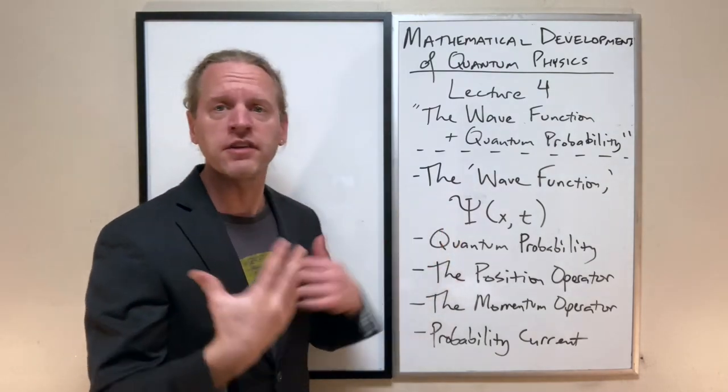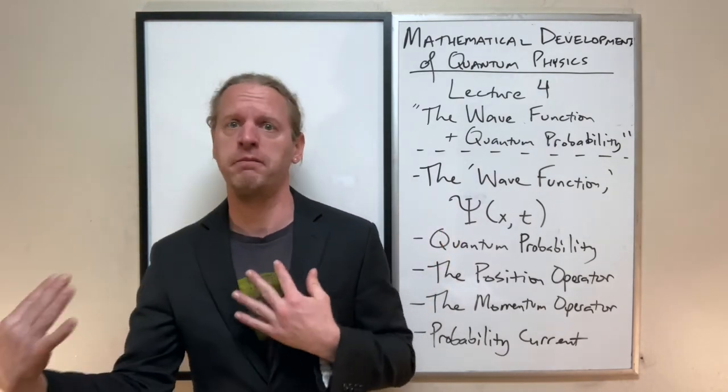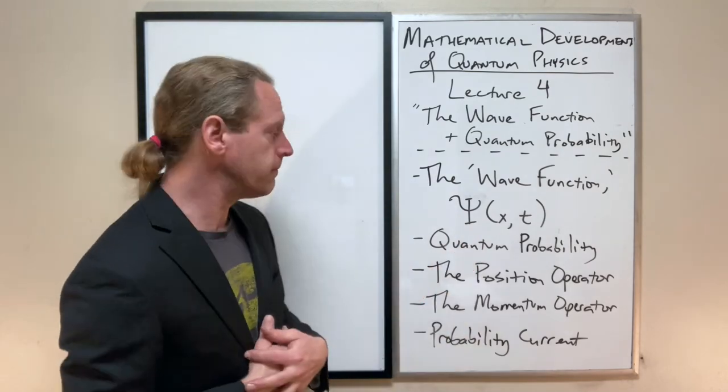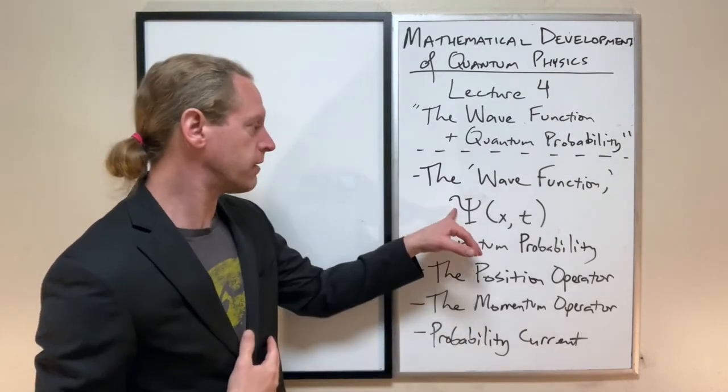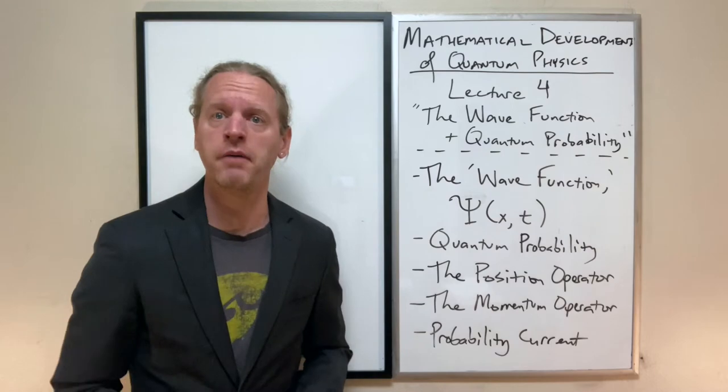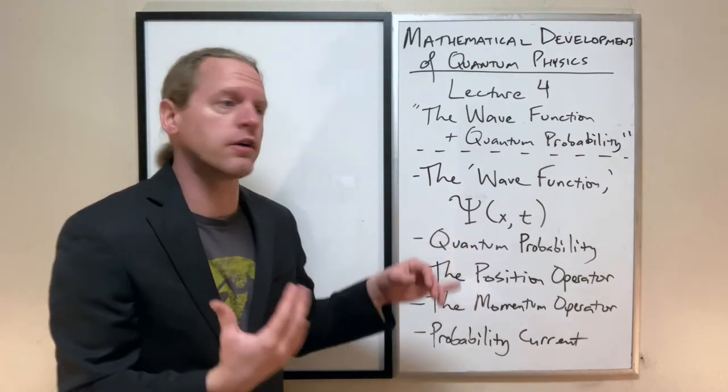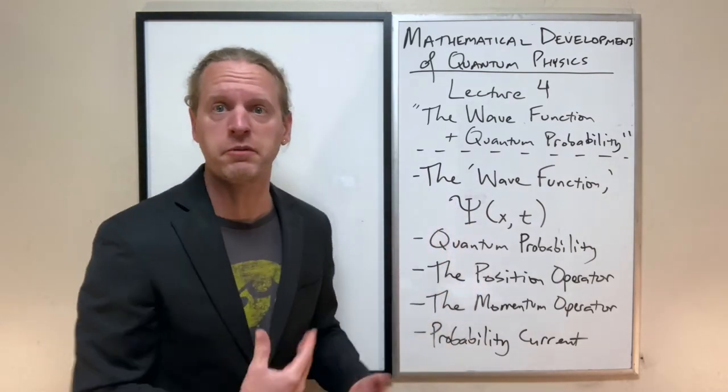So we'll discuss a little bit about the connections between classical probability and quantum probability based on this thing. And then we're going to proceed to talking about how to use our knowledge of whatever this thing represents